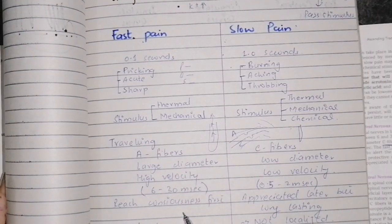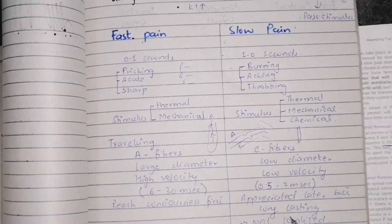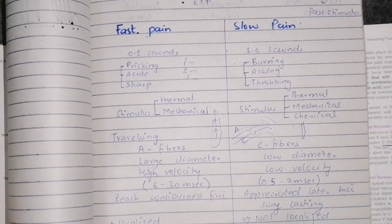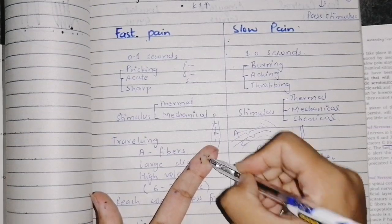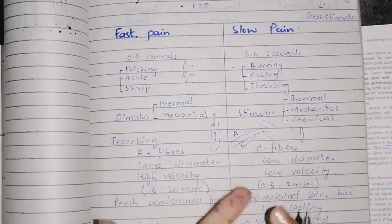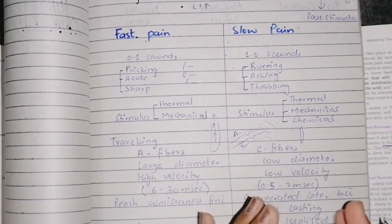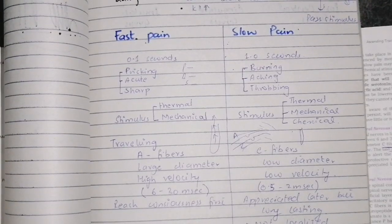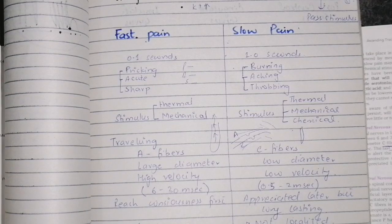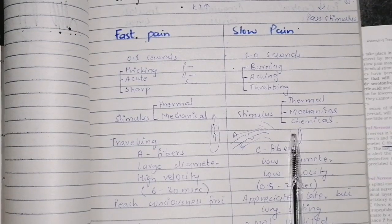Fast pain reaches the consciousness level quickly — like when we are pricked, we feel it immediately. Slow pain arrives a little later but is long-lasting. The most important difference is that fast pain is localized — for example, if I am hit with a hammer, my brain can sense exactly where the pain is. But slow pain cannot be localized. For example, in arthritis, the patient says pain is in all areas of the hip or knee joint and cannot pinpoint one exact place.